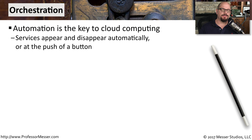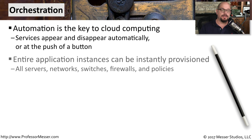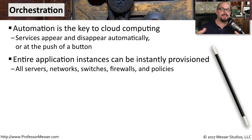One of the benefits of cloud computing is the ability to automate this entire provisioning process. We refer to this as orchestration, where we can push a button and an entire platform of applications can be deployed instantly. This means that we aren't deploying single servers or single pieces of an application — we can automate the entire process to deploy everything needed to run a particular application, all with one keystroke.